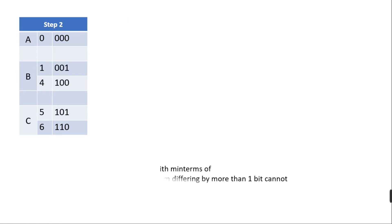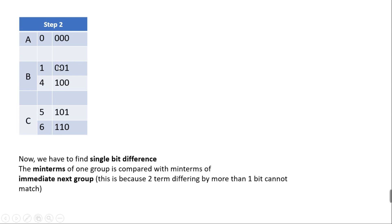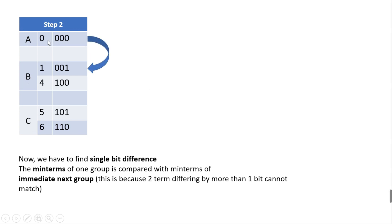Now I'm going to find single-bit differences from Step 2 by comparing the minterms of one group with the minterms of the adjacent group. I only compare one group with its immediate next group — group A with B, and group B with C. I will not compare group A with group C.